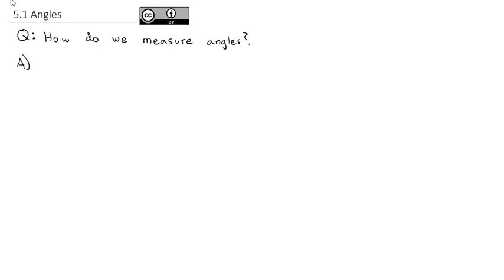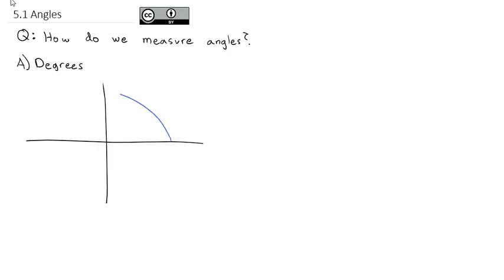The most common way angles are measured — the one you're probably most familiar with — is in degrees. If I've got a circle on this coordinate plane, we'll start on the far right and call that 0 degrees. Because somebody decided once that circles have a total of 360 degrees, if I go all the way around the circle back to my original point, we'll be at 360 degrees.